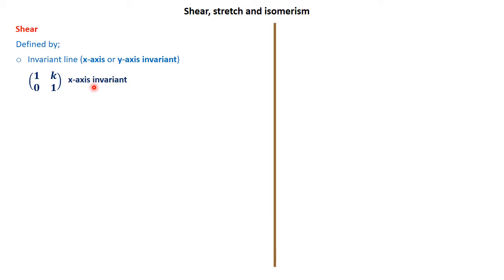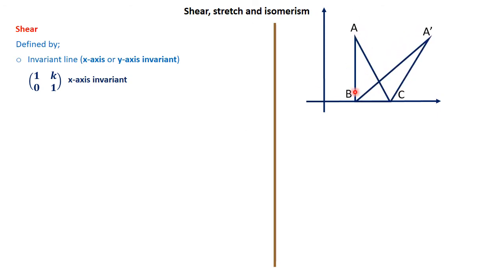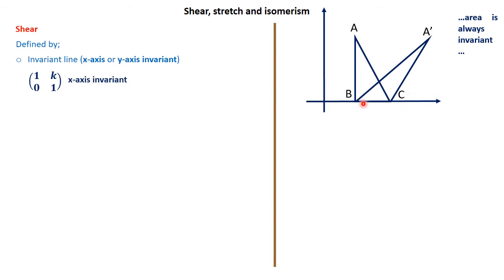Let me show you an image of that. We have a triangle ABC that has been transformed to A prime, B prime, and C prime. Now B prime and C prime are the same point, so I did not write them separately. The line BC is invariant, so in this case we say it's x-axis invariant. The matrix that produced this transformation would be something like (1, 2, 0, 1). Also note that the area of ABC is exactly the same as the area of A prime B prime C prime — area is invariant for shear transformations. That's another way we can identify a shear: the area did not change.